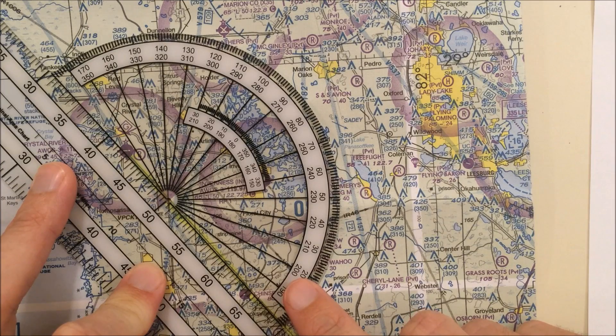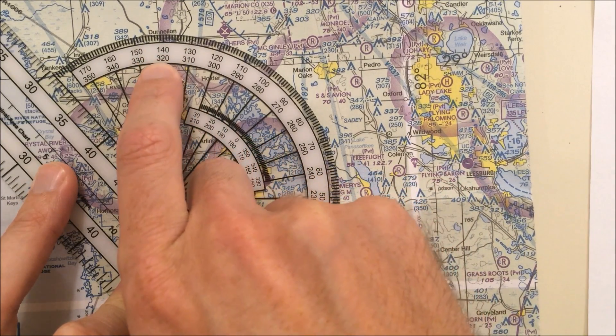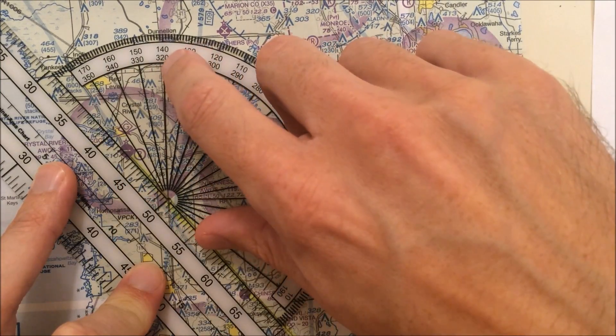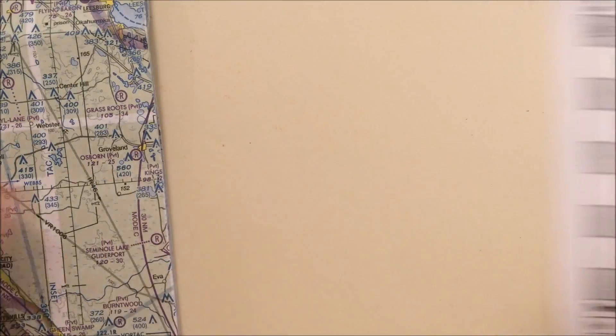Now which one of these makes sense? Well, 140 degrees is heading southeast, and 320 degrees is heading northwest. I'm heading northwest. So I'm going to pick 322 degrees as the reading for my true course on my second leg.